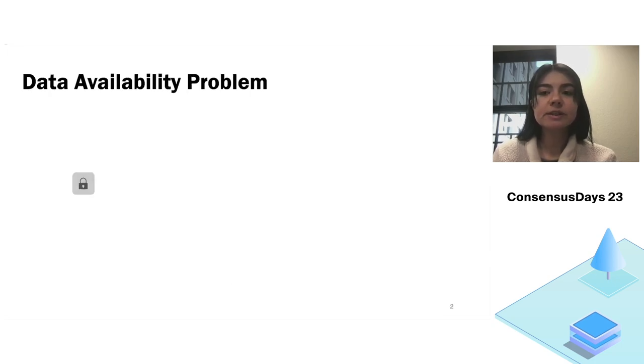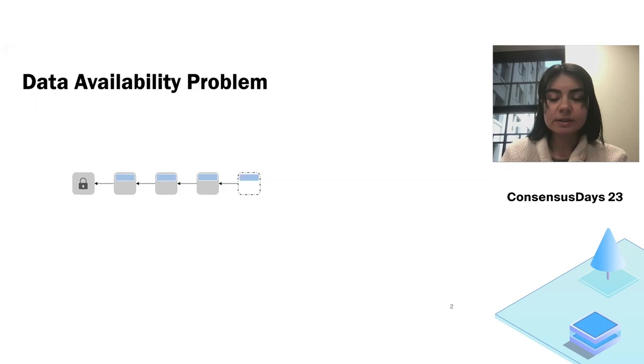First let me state what is the problem that we are trying to solve here, and this is a data availability problem that many of you may have heard about. It arises in different blockchain scenarios, but here let me focus on this very simple example just to give you some intuition about what the problem is about. So here we have a blockchain, blocks are getting proposed, they're all valid, so they're accepted, our blockchain keeps growing, and here this blue rectangular is a block header. And then imagine the following situation. A header is broadcasted to the network, but the corresponding block body is not available. So what should we do? Well, we have a few options here. First, let's just wait for the block body to appear.